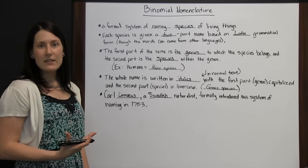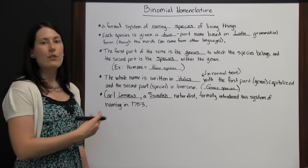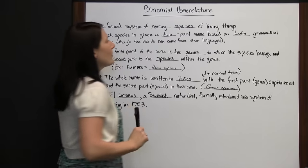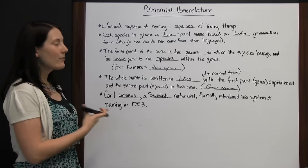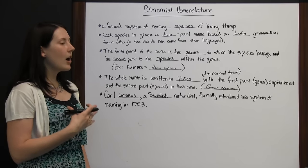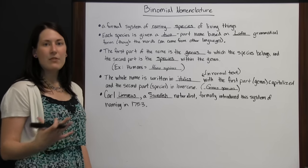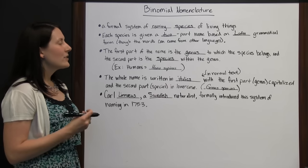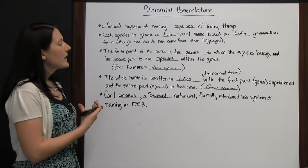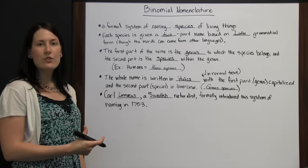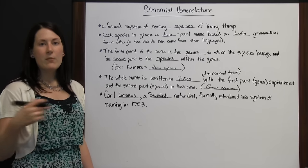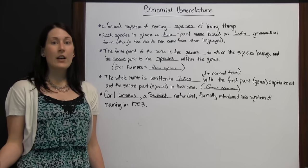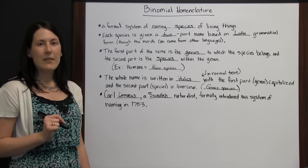Think about how many different animals and plants there are — it would be really hard to keep track of all of them throughout the world without a formal naming system. Since they're based on Latin grammatical form, and Latin is a dead language that won't evolve or change, the names will be the same throughout the world. So if you and someone else have different common names for a creature, it would be hard to know you were talking about the same one.